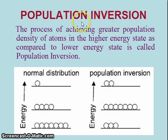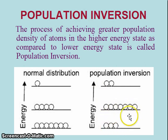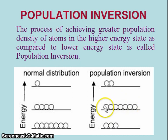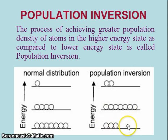But population inversion, as the name indicates, means an inversion of population — the number density of atoms is greater in the excited state than in the lower state. The number of atoms in the excited state is greater than the number of atoms in the lower state. This is called population inversion. The process of achieving greater population density in a higher energy state as compared to the lower energy state is called population inversion.